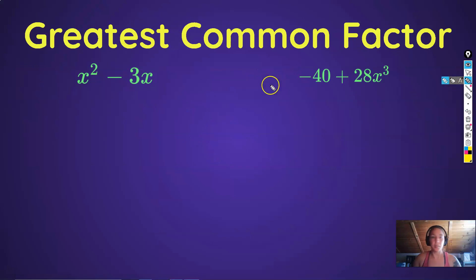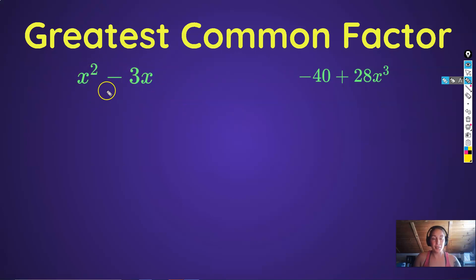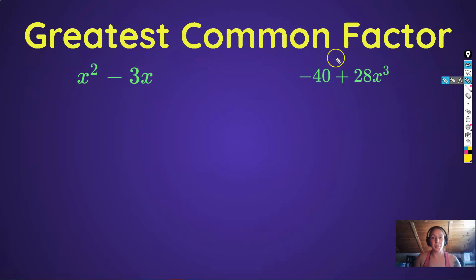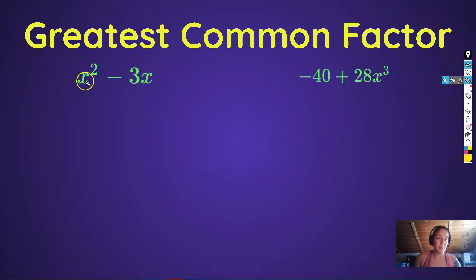The first factoring technique we're going to go over is greatest common factor, which is exactly what it sounds like. You have many terms — it doesn't really matter how many as long as it's more than one. What you're looking for is the greatest common factor of the numbers or coefficients, as well as the greatest common factor of the variables.